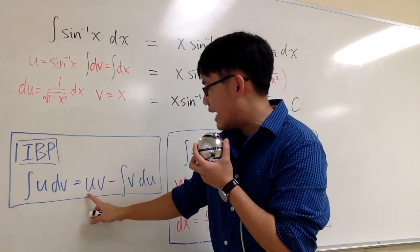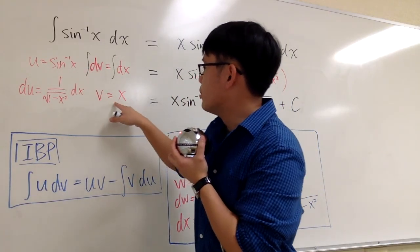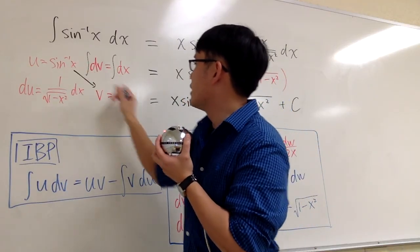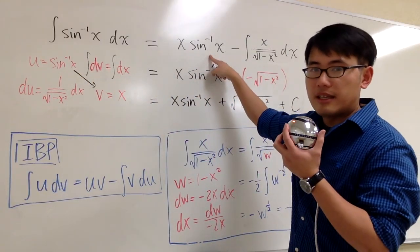The formula says we have to multiply u and v together. u is inverse sine x. We have to multiply that with v, which is x. So we are going to multiply these two together. Let me write this down as x times inverse sine x.